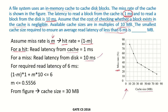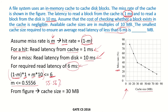We require a read latency of 6 ms. The times there is a hit — that is (1-m) times — the time required is 1 ms. And m times, meaning as many times there is a miss, we have to get the block from the disk, so the time required is 10 ms. This total must be less than or equal to 6 ms. Solving this, we get m ≤ 0.556, which is 55.56%.